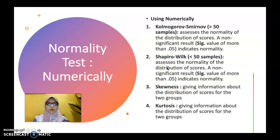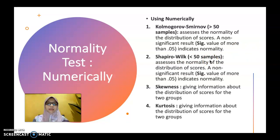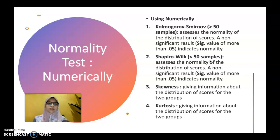Secondly, you can use Shapiro-Wilk, which is another numerical test used to find the normality of your data. It is typically used when the data involves less than 50 samples. The interpretation is the same as Kolmogorov-Smirnov — the p-value should be more than 0.05, which indicates that your data is normally distributed.